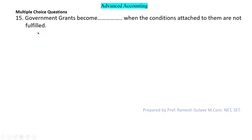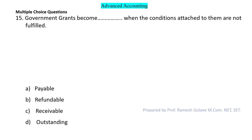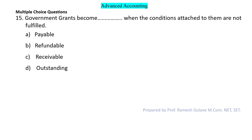Next question: Government grants become what when the conditions attached to them are not fulfilled? If a government grant was given to a firm with attached conditions and those conditions are not fulfilled, the grants become refundable. So option B is the right answer.